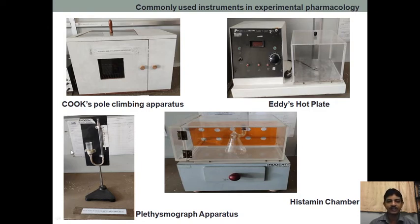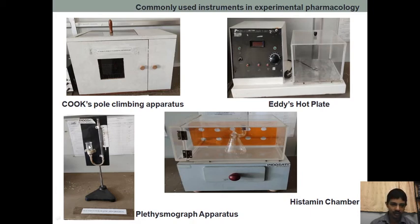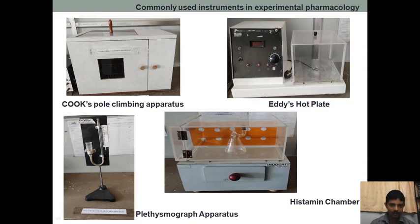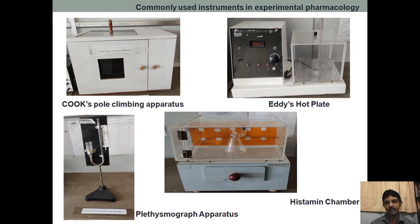Next is the plethysmograph apparatus, used to check anti-inflammatory activity — carrageenan-induced paw edema. We give carrageenan into the paw of the rat so the paw becomes inflamed. The apparatus is filled with mercury. As soon as we dip the inflamed paw through the larger arm, mercury rises through the shorter arm. Using the scale, we measure how many centimeters the mercury rises, which gives us the volume. We compare control and after drug treatment or after carrageenan induction to check the paw edema.